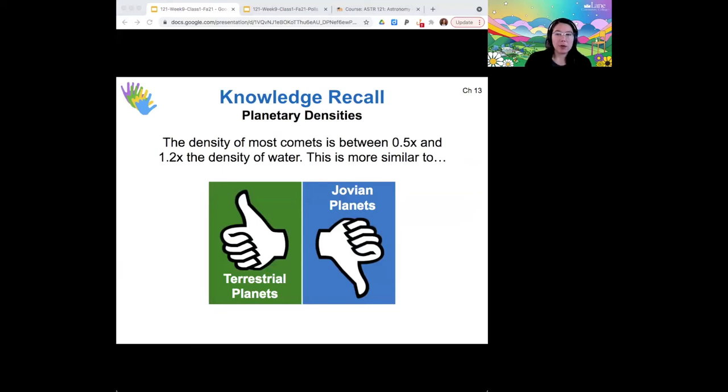So the density of most comets is between half of the density of water and 1.2 times the density of water. Which of these is it closest to in composition based on that density?